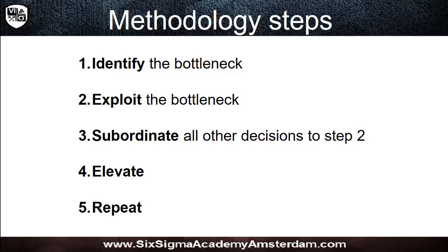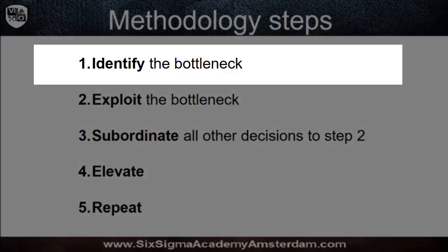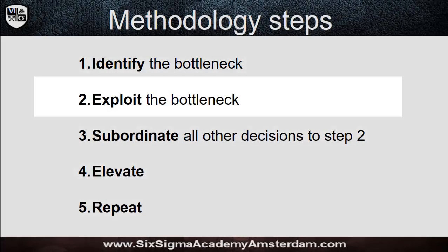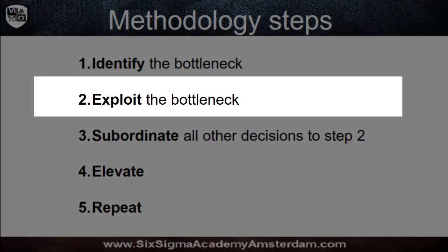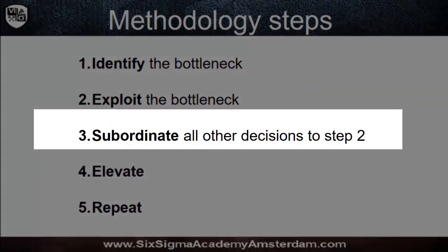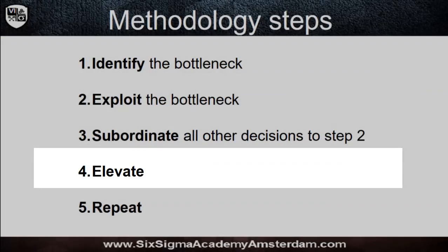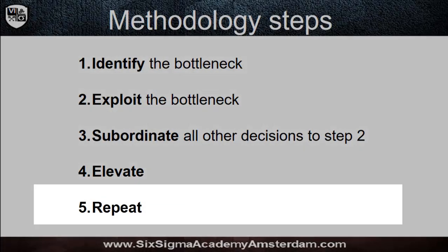So what can we do to improve the performance of the process? We have five steps. The first is about identifying the bottleneck. The second step is about exploiting the bottleneck. We subordinate the system to that bottleneck. We elevate, and then we repeat the whole process.